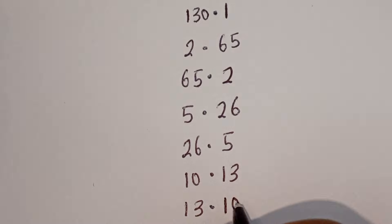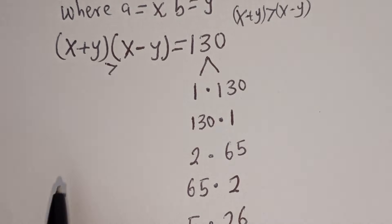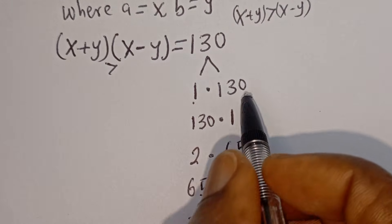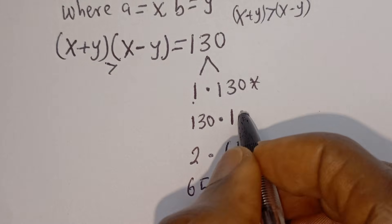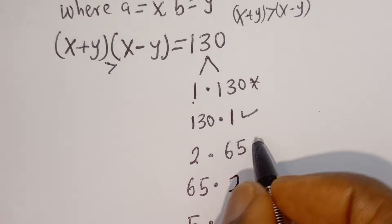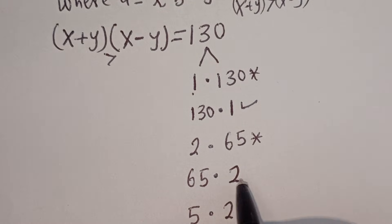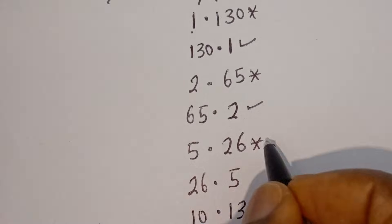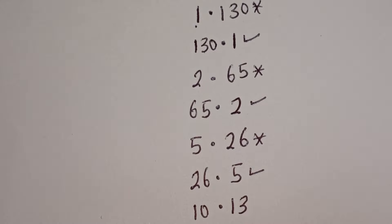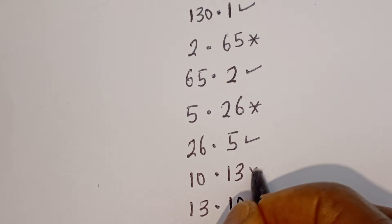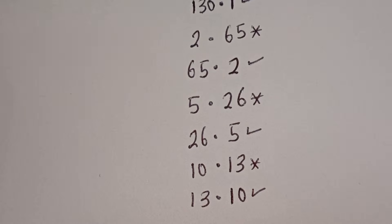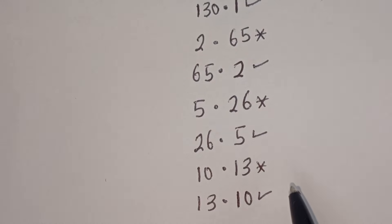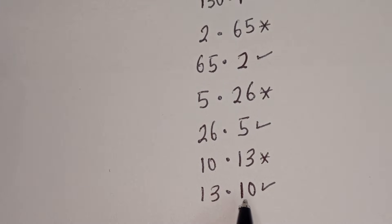The rule is X + Y must be greater than X − Y. So: 1 < 130 — this is cancelled out; 130 > 1 — this is true. 2 < 65 — cancelled out; 65 > 2 — true. 5 < 26 — cancelled out; 26 > 5 — accepted. 10 < 13 — cancelled out; 13 > 10 — accepted. We have 4 valid cases.